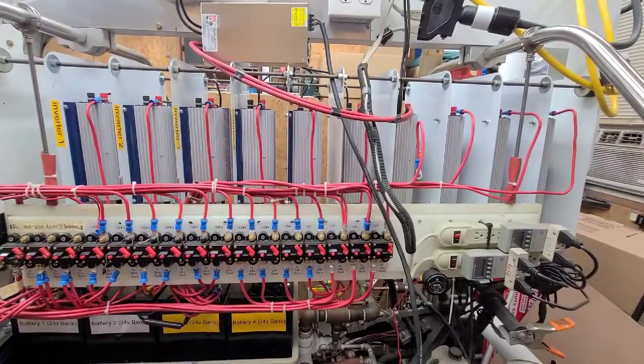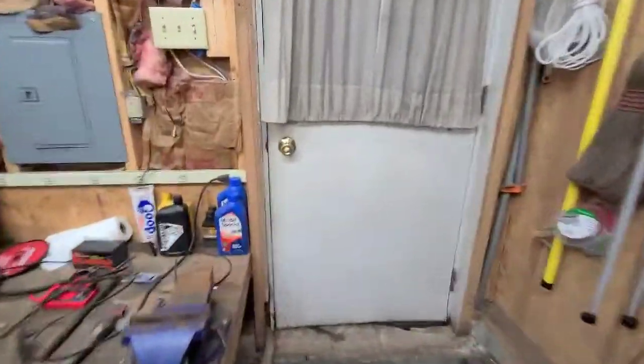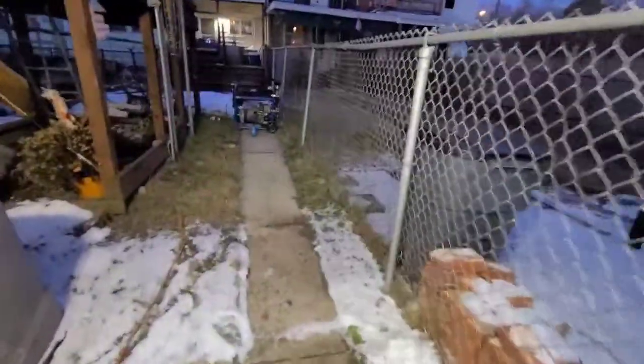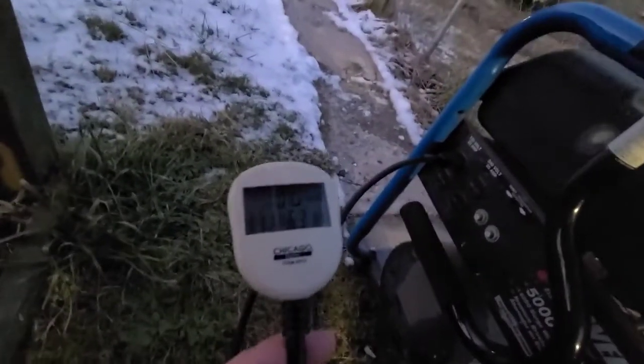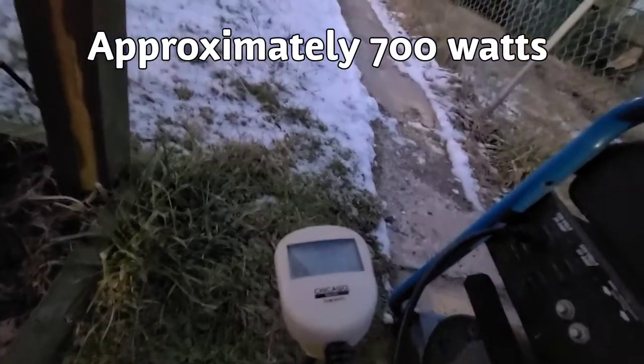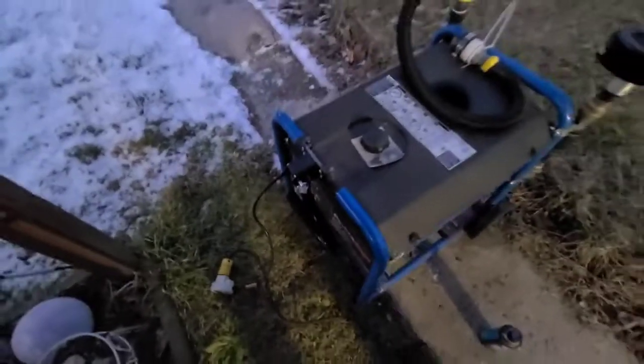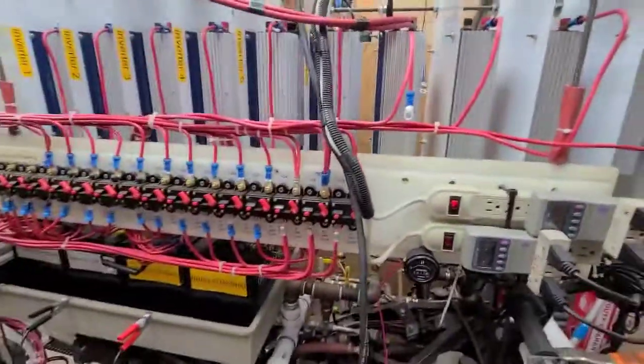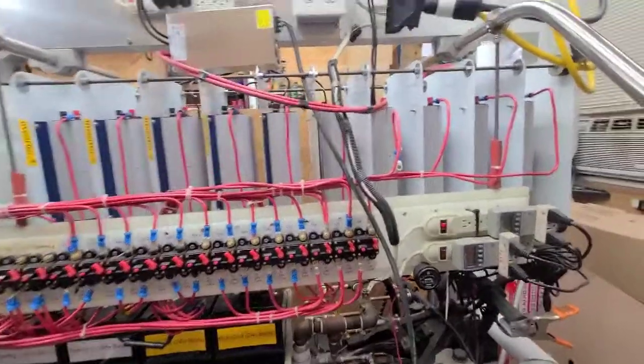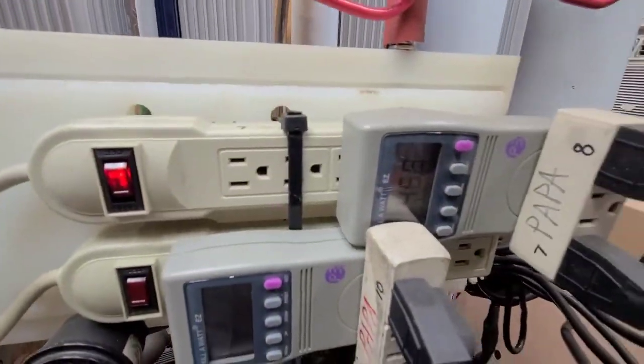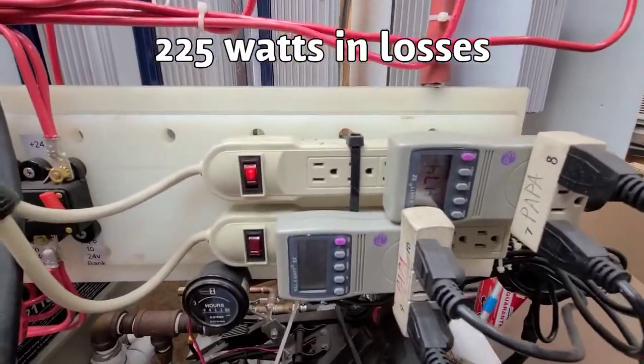So now we're going to take a walk outside and see how many watts are being drawn from the generator. So 696 watts, maybe 700 watts, to produce 475 or so watts of grid tie power.